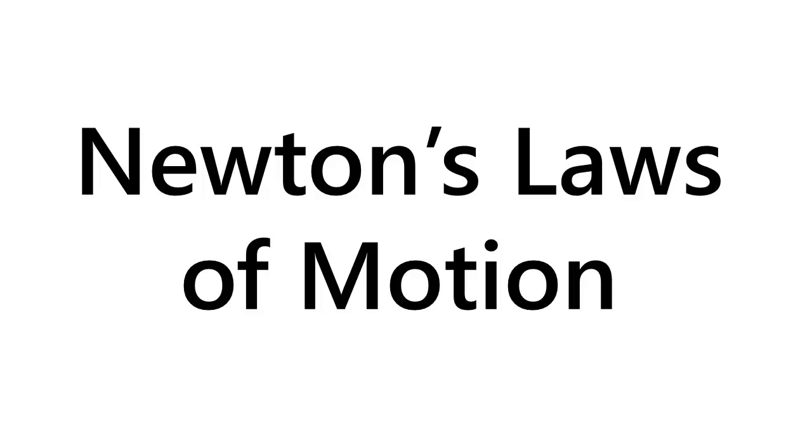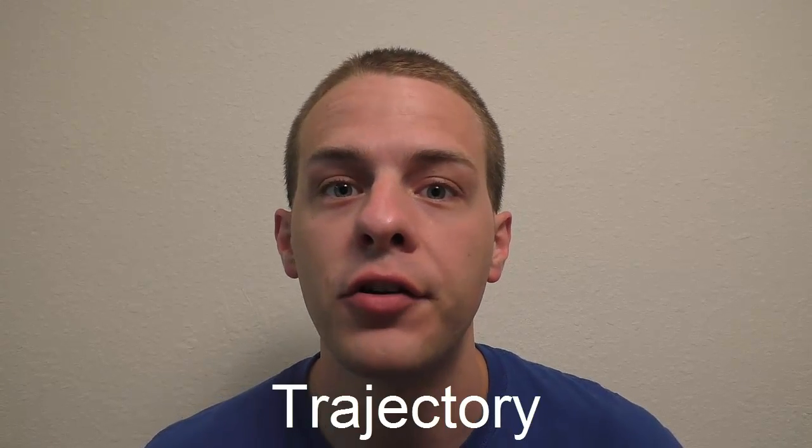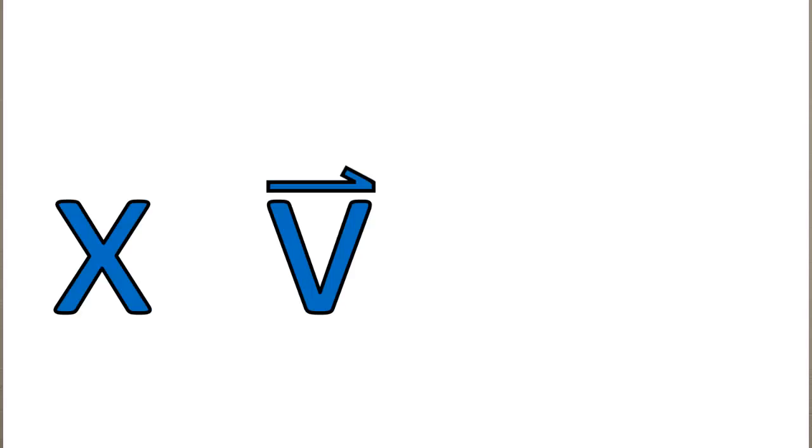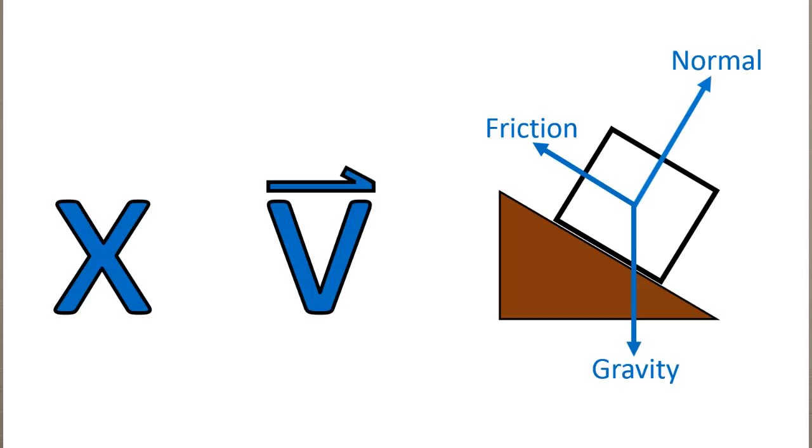Everyday objects, like this cell phone, obey Newton's laws of motion. And even if you've never studied Newton's laws before, you're probably familiar with them on some level. They basically just say that an object is going to follow a trajectory or path that is determined by the object's position, its velocity, and the forces that act on it.